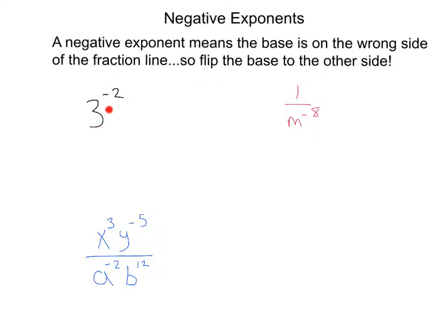Here we have 3 to the negative 2. All we need to do with this one is put that on the denominator. So that would be 1 over 3 squared, making the exponent positive.